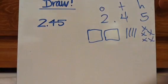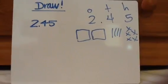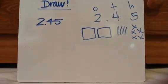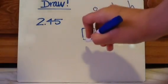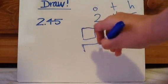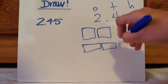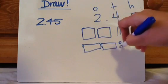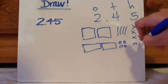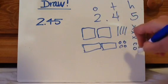So 2 and 45 hundredths: ones, tenths, hundredths. 2 ones would be 2 of these squares, 4 tenths, and 5 hundredths. It's that easy. You can also think of money: two $1 bills, 4 dimes, and 5 pennies.